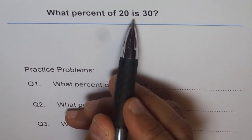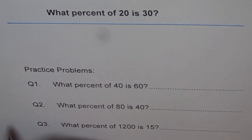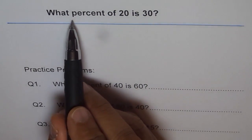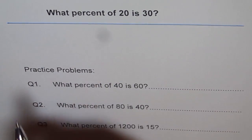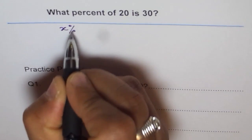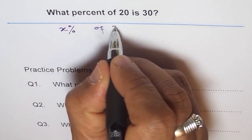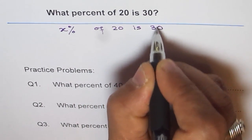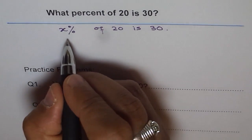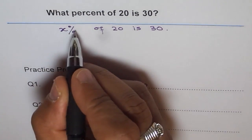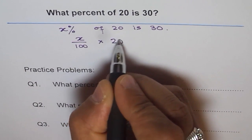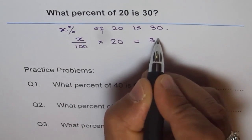What percent is not known, so we'll write x percent. We say x percent of 20 is 30. Let's translate this into our equation: x percent makes x over 100, 'of' means times 20, and 'is' means equal to 30.